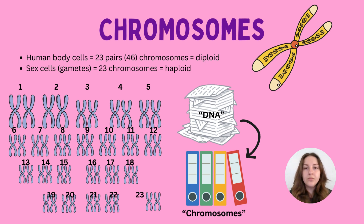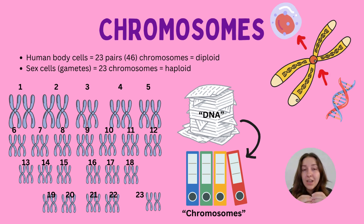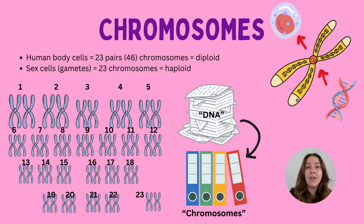In our sex cells — so if you're a man, your sperm cell, and for a woman, it's the egg cell — there will be 23 chromosomes, not 23 pairs. This is because those cells are haploid, meaning they have half the genetic information. When the sperm and egg are joined together during a fertilisation event, this is essentially what makes the 23 pairs, or 46 in total.